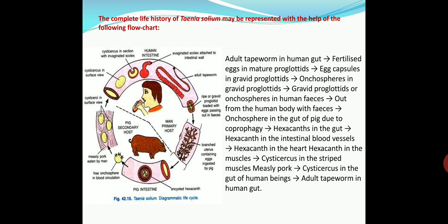In this diagrammatic life cycle, you can clearly see the different stages of Taenia solium and exactly where the life cycle takes place between man and the pig.